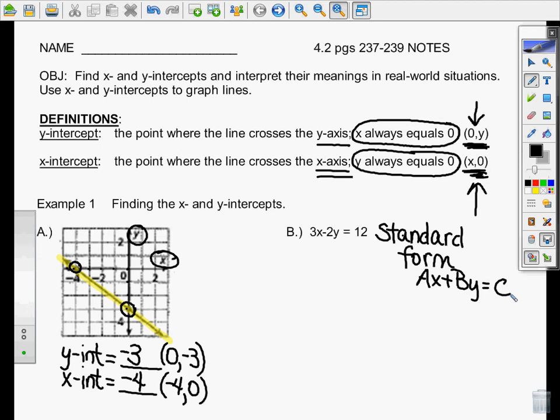I do something called the Cover-Up Method. Let me rewrite this out so you can see it bigger. And this is what I do. When I'm trying to find the x-intercept, I'm looking for the x, I cover up the y. What equation do you see there? If you are thinking, oh, I see 3x equals 12, you're exactly right.